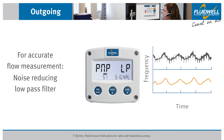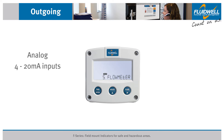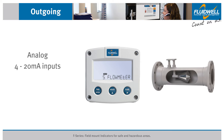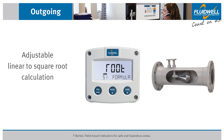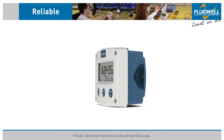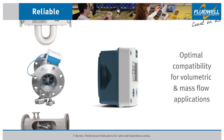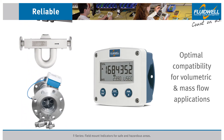A noise-reducing low-pass filter or linearization of the flow curve are available for more accurate flow measurement. For applications with analog 4 to 20 milliamps inputs, like differential pressure flow transmitters, the analog input is adjustable from linear to square root calculation. This results in optimal compatibility with almost any flow meter for volumetric and mass flow applications.